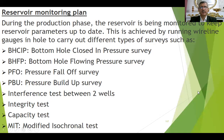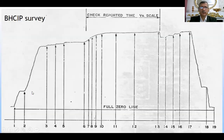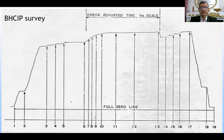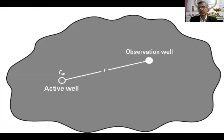There is a reservoir monitoring plan — what types of surveys we do during the well life cycle, done by wireline method and how to interpret them. This is called the modified isochronal test survey, and this is BHP (bottom hole pressure) buildup. Here we have an observation well — if we don't want to close the well, we measure the reservoir pressure from a nearby well.